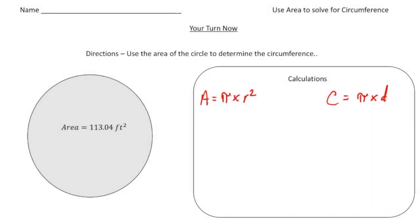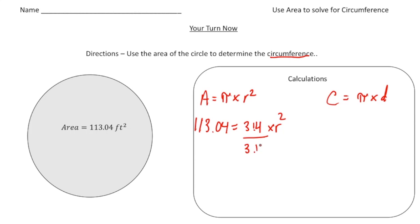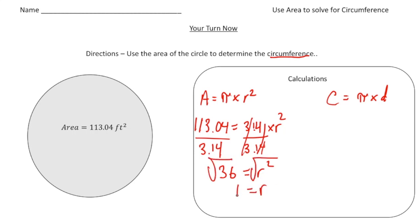Welcome back. Let's do this practice problem. Here we know the area is 113.04 square feet, and again we want to know what the circumference is. I've written down both our two important formulas — the formula for area and the formula for circumference. Now I'm going to use the area formula first to solve for r. I'm going to plug in 113.04, which equals 3.14 times radius squared. Dividing both sides by 3.14, radius squared equals 113.04 divided by pi, which is 36. Then square root both sides, so the radius is 6. Once we know the radius is 6, we know the diameter is going to be twice that, which is 12.